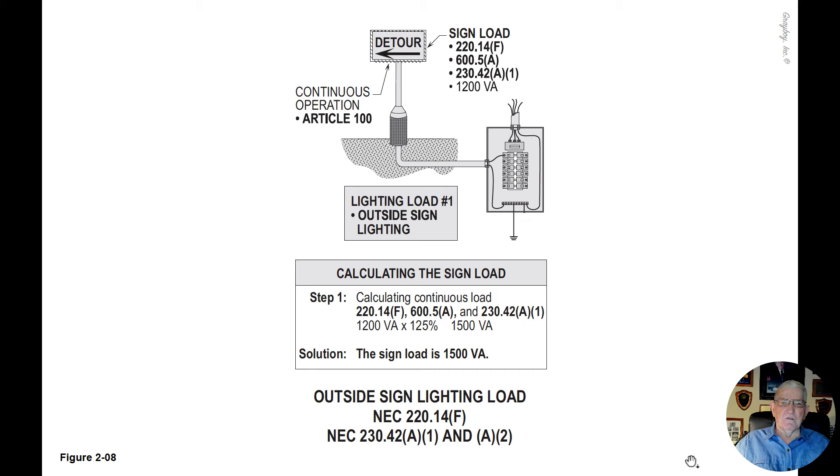Notice that 220.14F for the sign load in the illustration refers you over to 600.5A. And then we would apply 230.42A1 because this deals with total VA for the service.